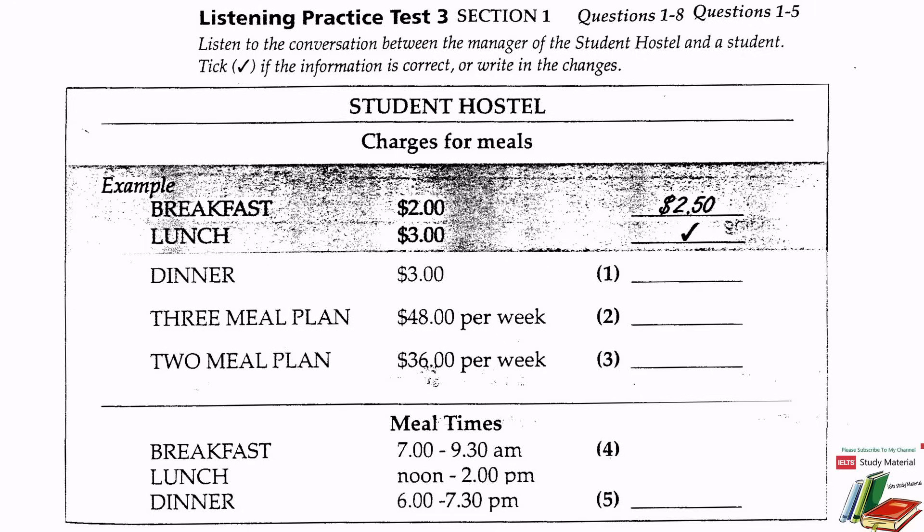But the best deal is the three meal plan for forty-eight dollars per week. We give you vouchers to present when you come into the cafeteria and you get twenty-one meals for your forty-eight dollars. That works out to a little more than two dollars a meal. The two meal plan is also at last year's rates of thirty-six dollars per week. We give you vouchers for that too.